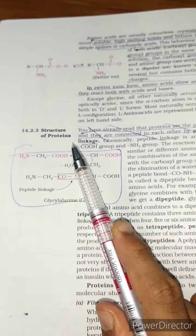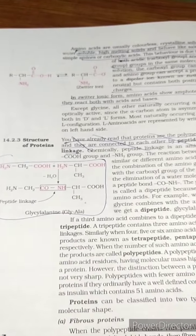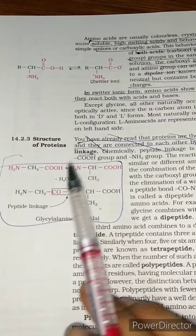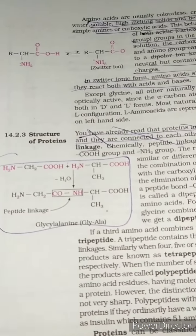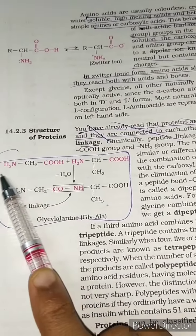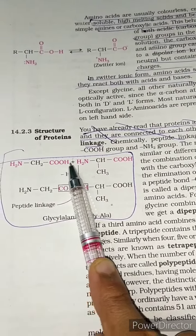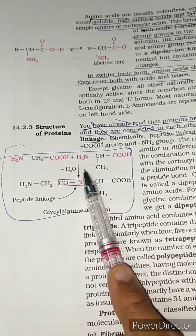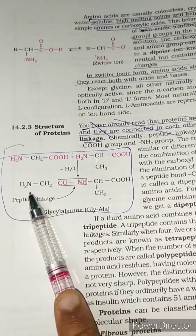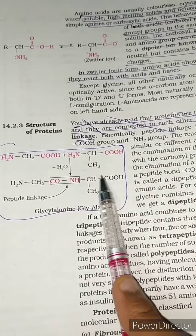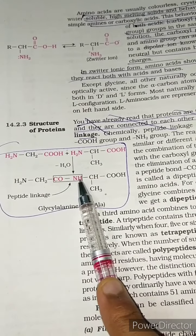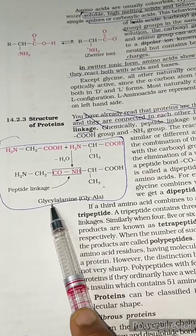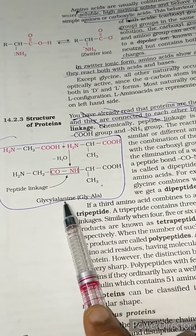Regarding the structure of proteins: the diagram shows how amino acids such as glycine and alanine are connected. The linkage between them — the C=O and NH bond — is called a peptide link. The example compound shown is glycylalanine. Questions in NCERT are formed from this diagram.